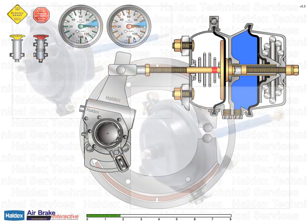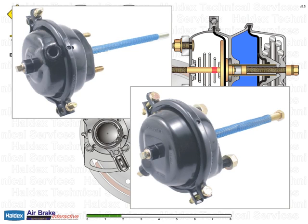Standard and long stroke service brake chambers are identified by the shape of the rear air chamber housing. On standard stroke service brake chambers, the rear housing is smooth or has a raised round shape section.